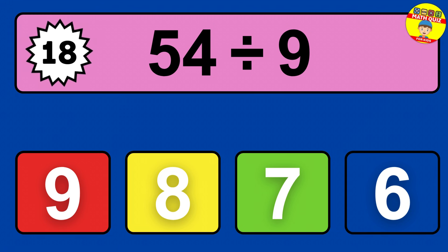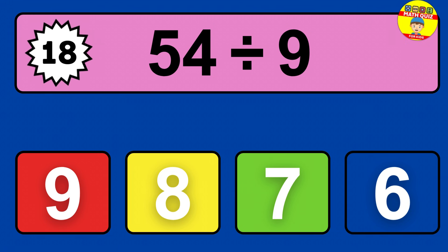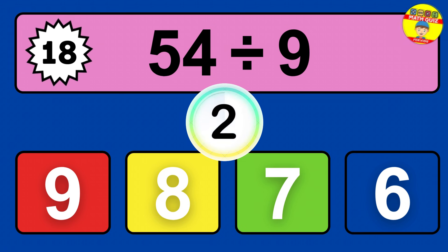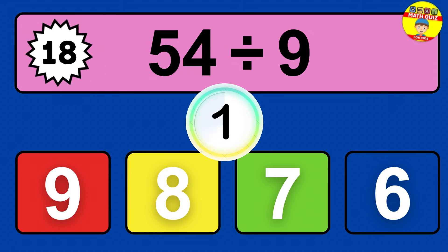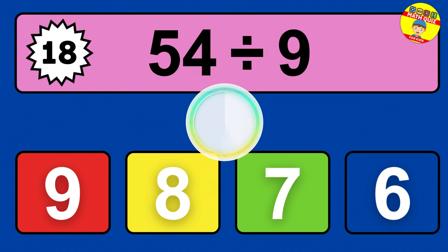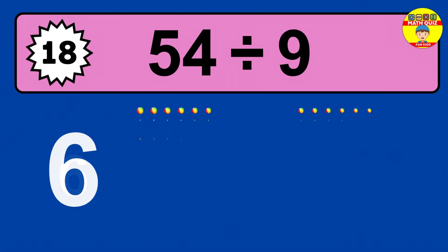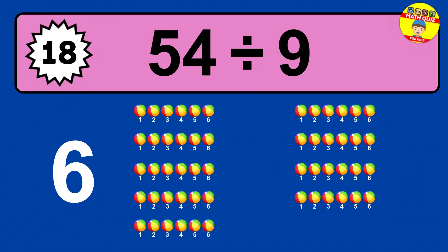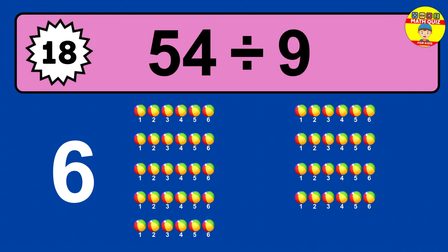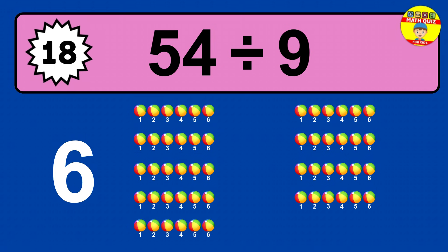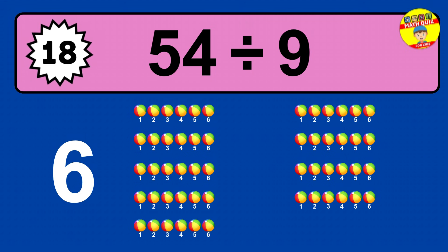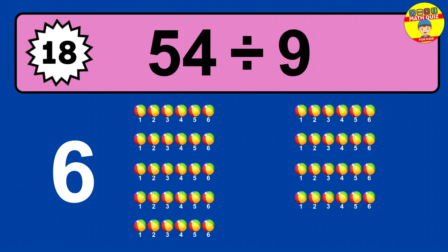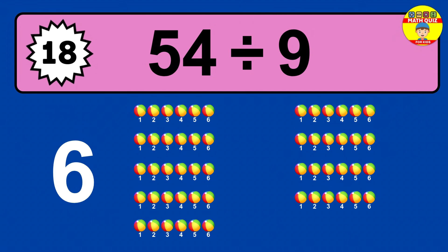54 divided by 9 — time to think. Let's go to the solution. Divide the number 54 by 9. Each group contains 9 units, so dividing 54 by 9 results in 6 equal groups. Thus, the result is 54 divided by 9 equals 6.